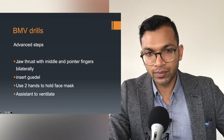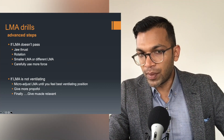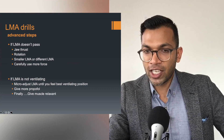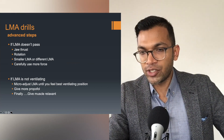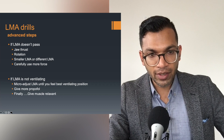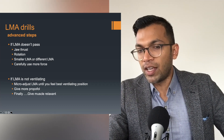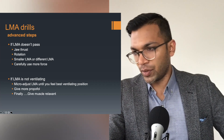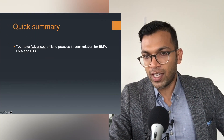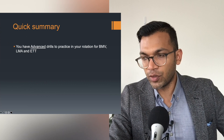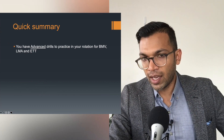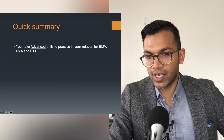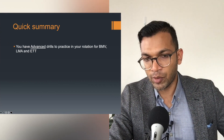For LMA drills: jaw thrust, rotation of the LMA, use a smaller or larger LMA, or a different LMA, and carefully use more force to advance it. If the LMA isn't ventilating, you can do micro-adjustments, give more profile, or give more muscle relaxant. Quick summary: you now have the advanced drills to practice for all three techniques and know how to use those extra optimisation steps when you predict difficulty.